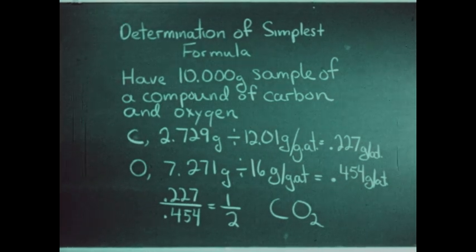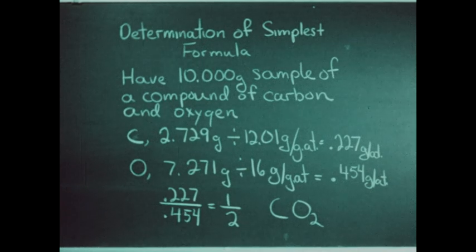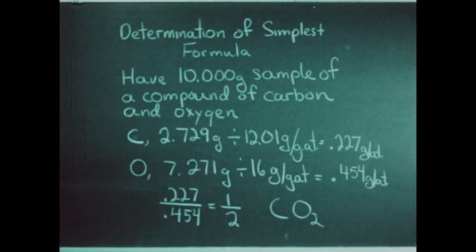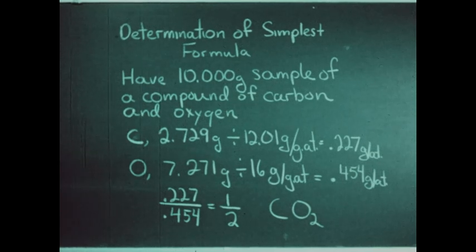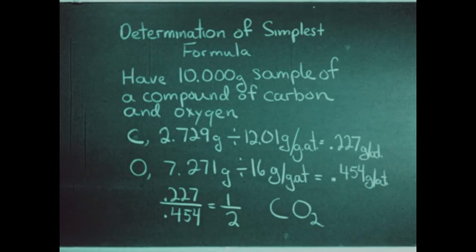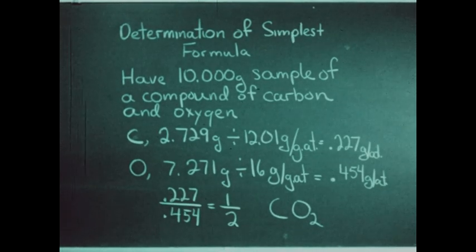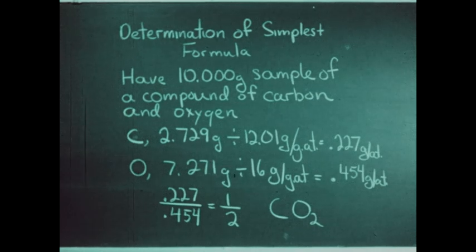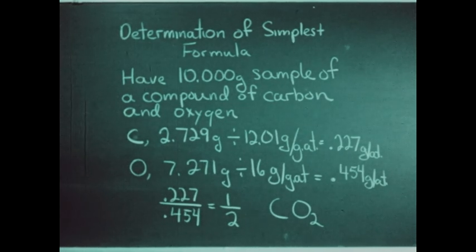One of the first things that a chemist must do when studying a new compound is determine the simplest formula of that compound. In order to do this, two different items of information must be known: the ratio by weight in which the elements combine, and the atomic weight of each of the elements involved.